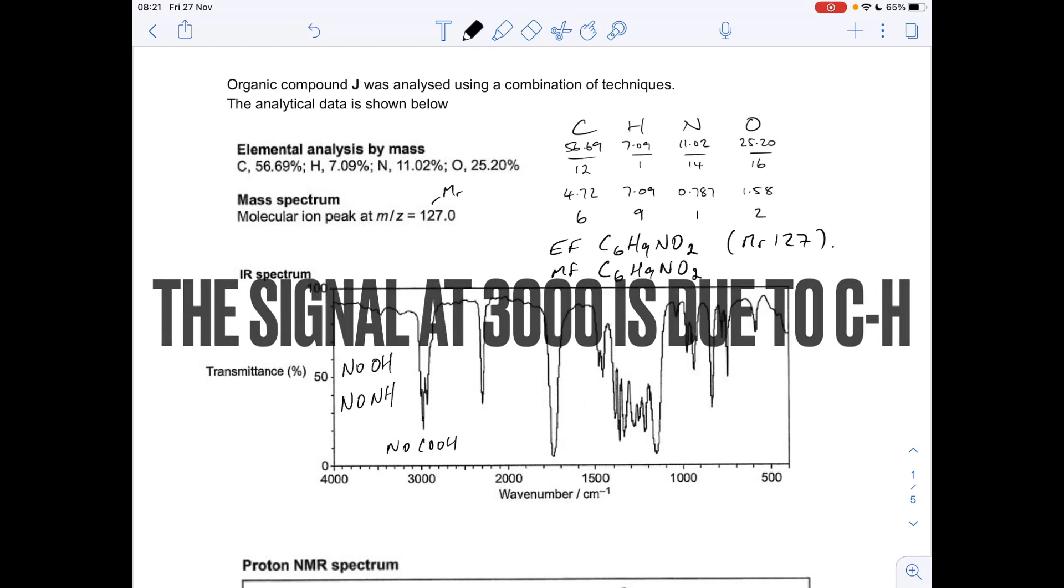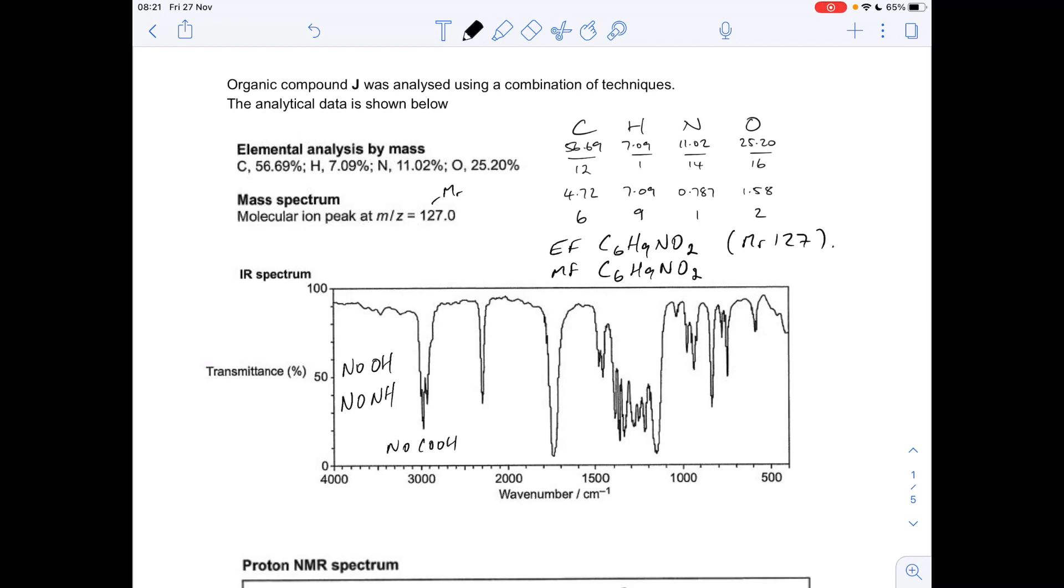It's worth writing down what you haven't got as well as what you have got. The other place I would look is here, about 1700. You can see there's a definite absorption there—that's a classic C double bond O. There's something here which is interesting: if you go to your data sheet, that's a C triple bond N. We can infer that this molecule J could be a nitrile. We'll have that at the back of our mind as we go into the rest of the analysis.